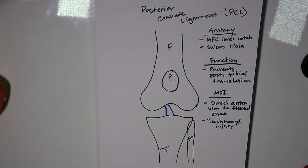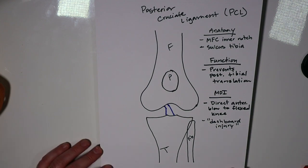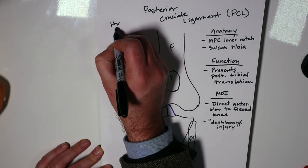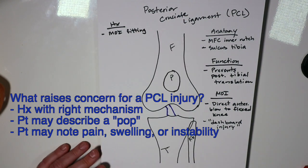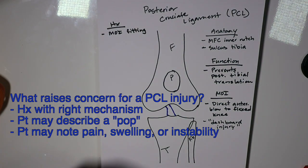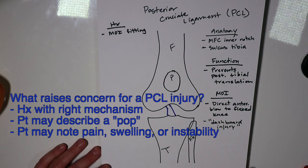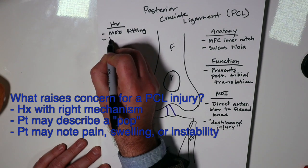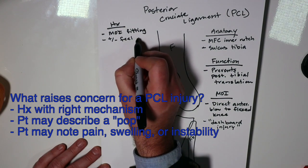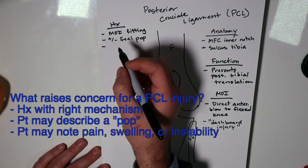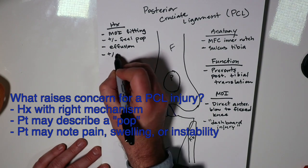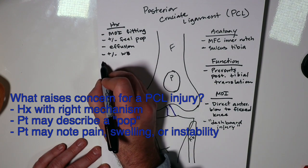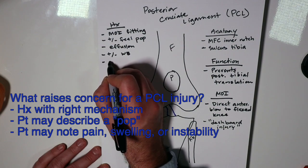What does a patient with a PCL injury present like? They have to have a fitting mechanism of injury. For example, a football player who was running the ball with his foot planted, knee flexed, and took a blow to the front of the knee — that is the classic mechanism. They may or may not feel a pop or snap. They quite possibly have an effusion depending on the degree of injury. They generally don't have as much instability as, say, an ACL tear.